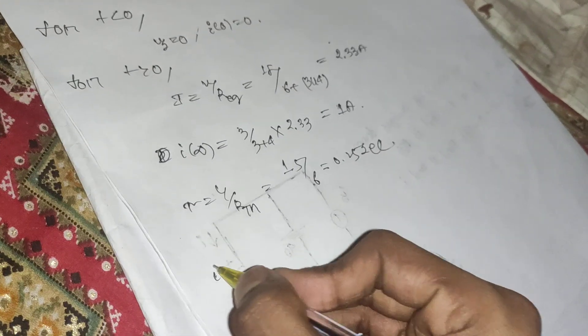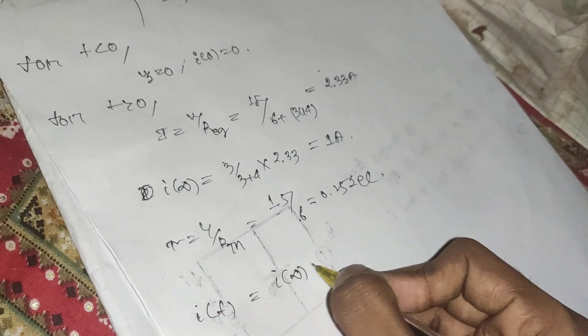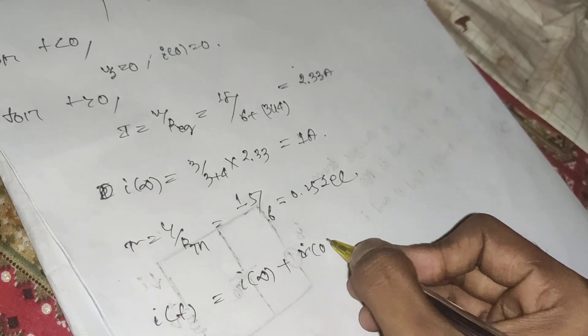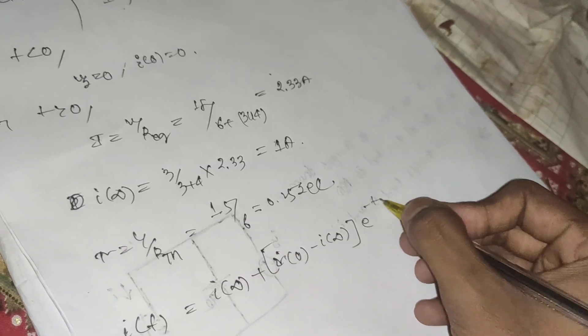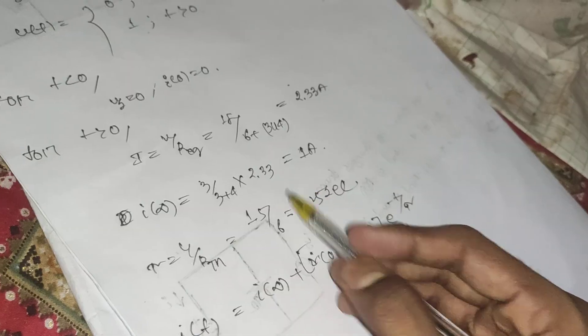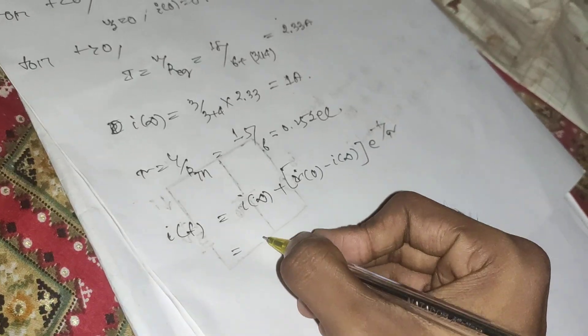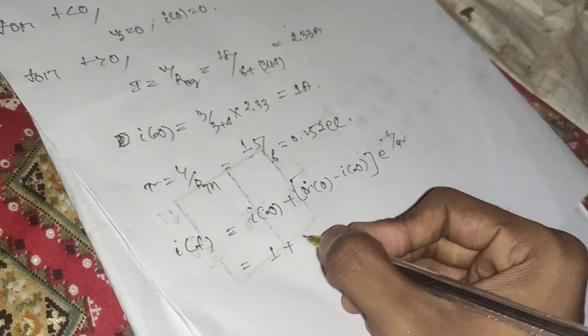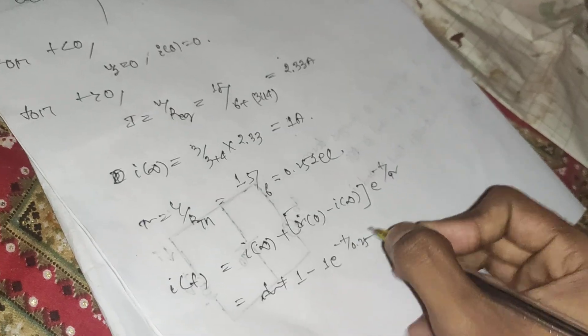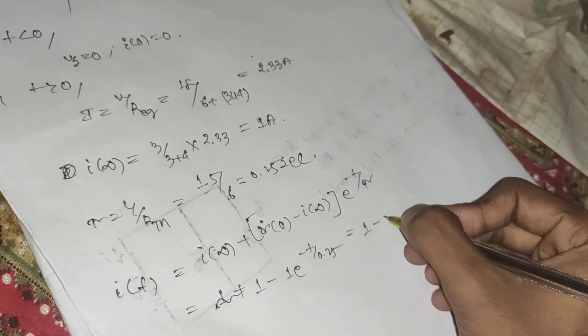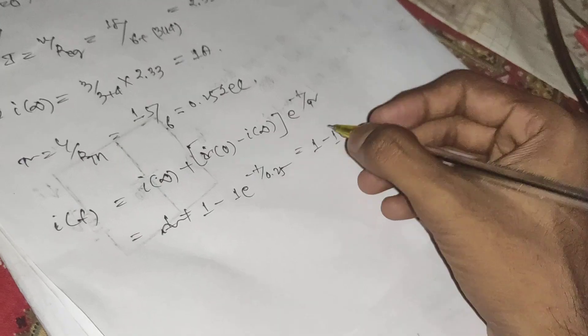We now write the current equation: i(t) = i(∞) + [i(0) − i(∞)]·e^(−t/τ). With i(∞) = 1 and i(0) = 0: i(t) = 1 + (0 − 1)·e^(−t/0.25) = 1 − e^(−4t) amperes.